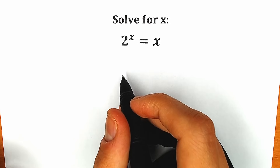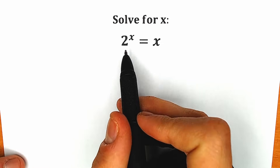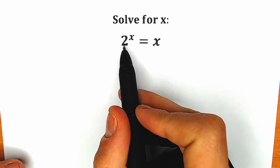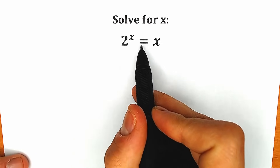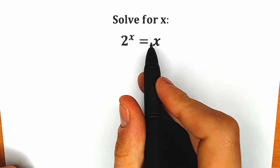Hello everyone! Welcome back to my channel Higher Mathematics. Today we have a very interesting exponential equation from Methalymbian. We have 2 to the x equal to x, and we need to find our x.